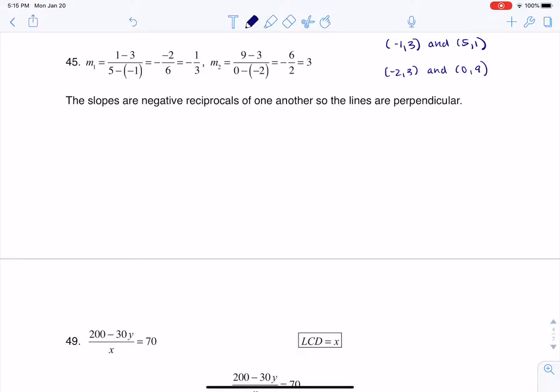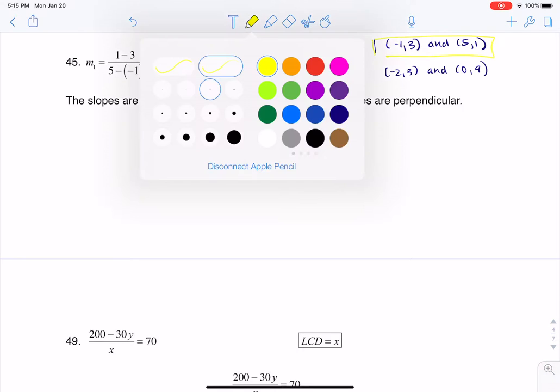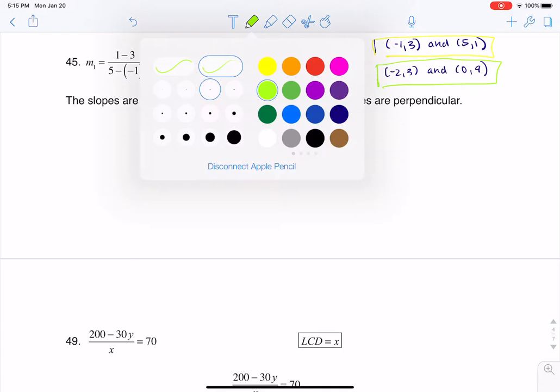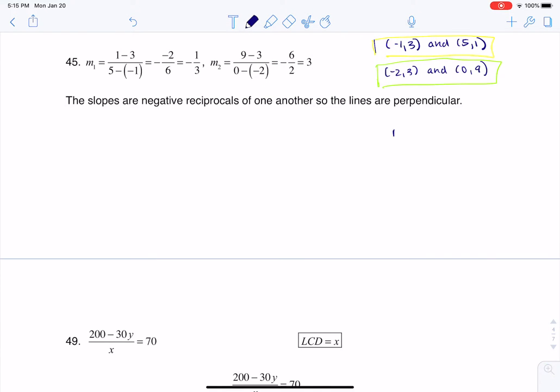Now for both of these sets of ordered pairs, let me use a different color. For this first set here and then the second set here, I'm going to find the slope of the lines between them. The formula I'm going to use is always y2 minus y1 over x2 minus x1.